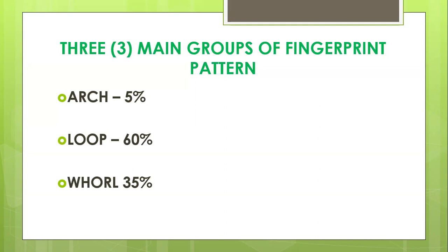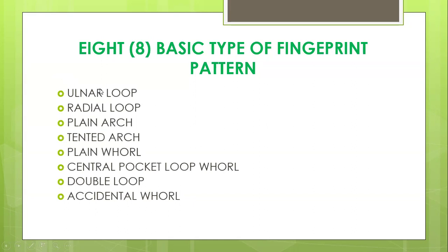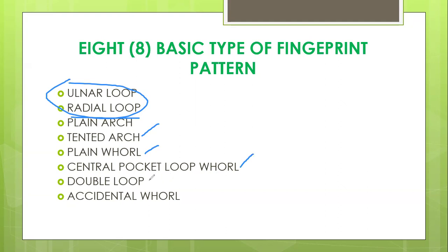Among these three families, there are eight basic types of fingerprint pattern. From the loop pattern, we have what we call the ulnar and radial loop. Under the arch pattern, we have the plain arch and the tented arch. The whorl pattern comprises four specific patterns: the plain whorl, central pocket loop whorl, double loop, and accidental whorl.